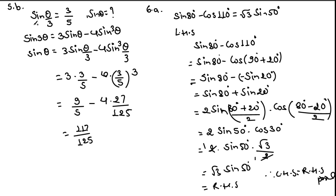Question 5b: if sin(θ/3) = 3/5, find the value of sin θ. We use the formula sin 3θ = 3 sin θ − 4 sin³θ. Replacing θ with θ/3: sin θ = 3 sin(θ/3) − 4 sin³(θ/3). Substituting sin(θ/3) = 3/5: sin θ = 3(3/5) − 4(3/5)³ = 9/5 − 4(27/125) = 9/5 − 108/125 = 117/125.